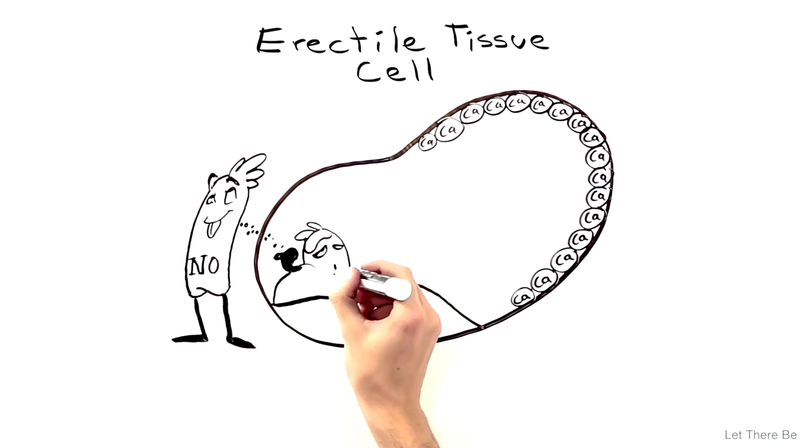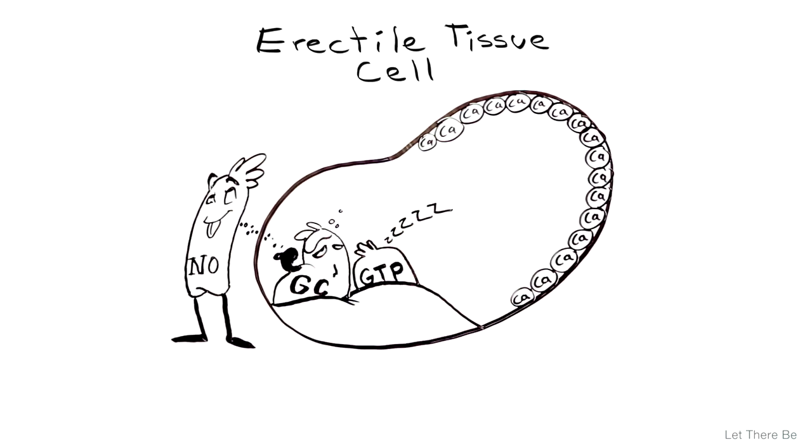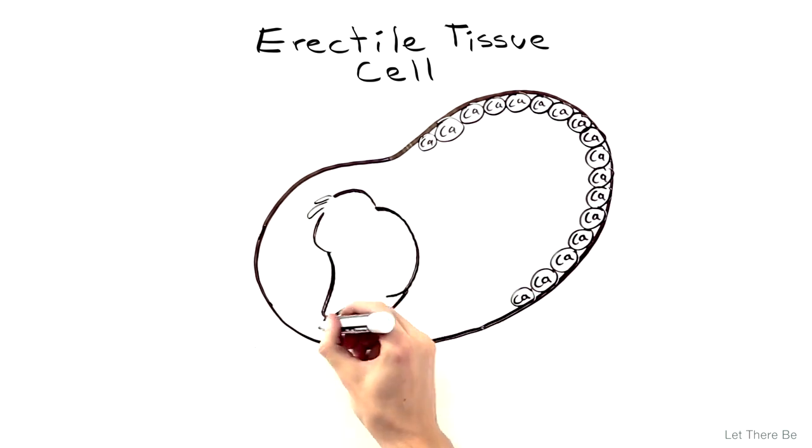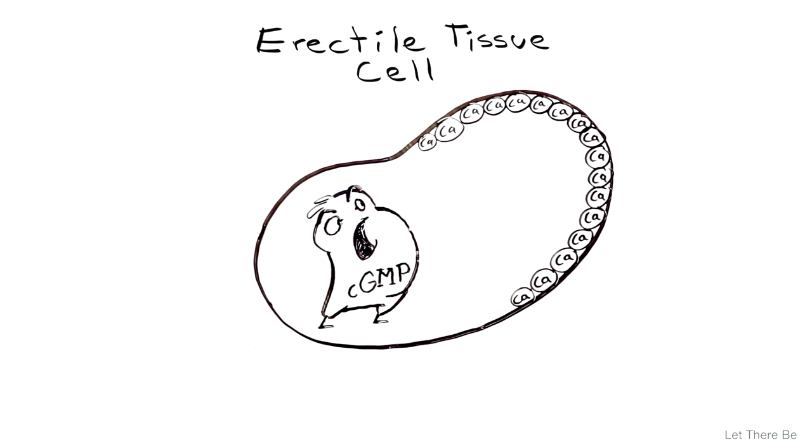Nitric oxide stimulates guanylate cyclase to convert guanosine triphosphate to cyclic guanosine monophosphate, or cyclic GMP.